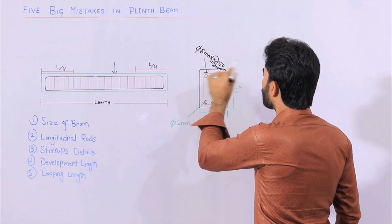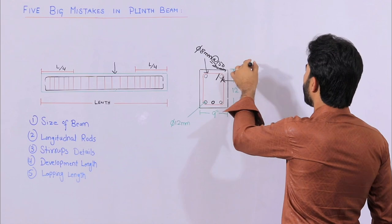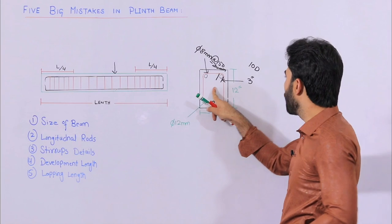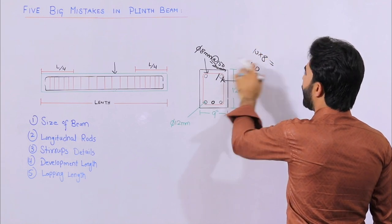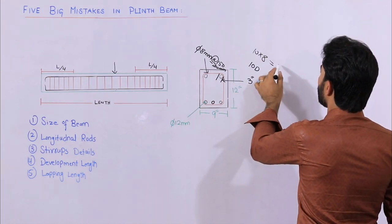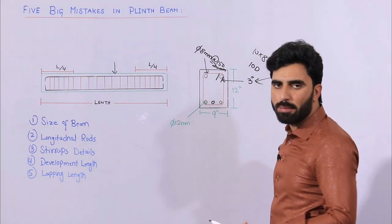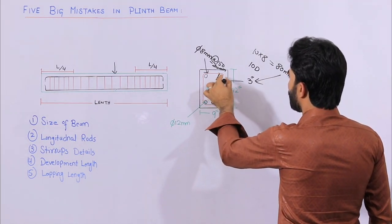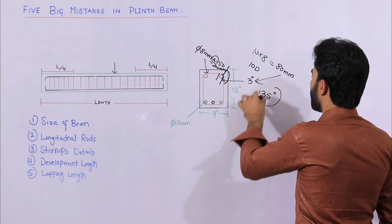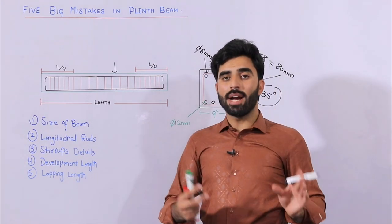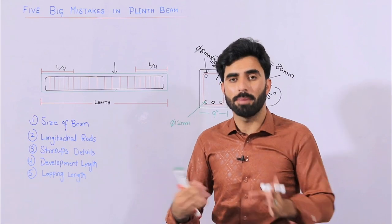The hooks of stirrups should be provided, and the hook length should not be less than 3 inches, or 9d to 10d where d is the diameter of the stirrup steel. For example, using 10d: 10 multiplied by 8 mm equals 80 mm, which is about 3 inches. The hooks should be provided at an angle of 135 degrees — not 90 degrees; 135 is best. Also, provide the hooks alternately — not all at the same direction. For beams, alternate the hooks up and down, one side then the other.